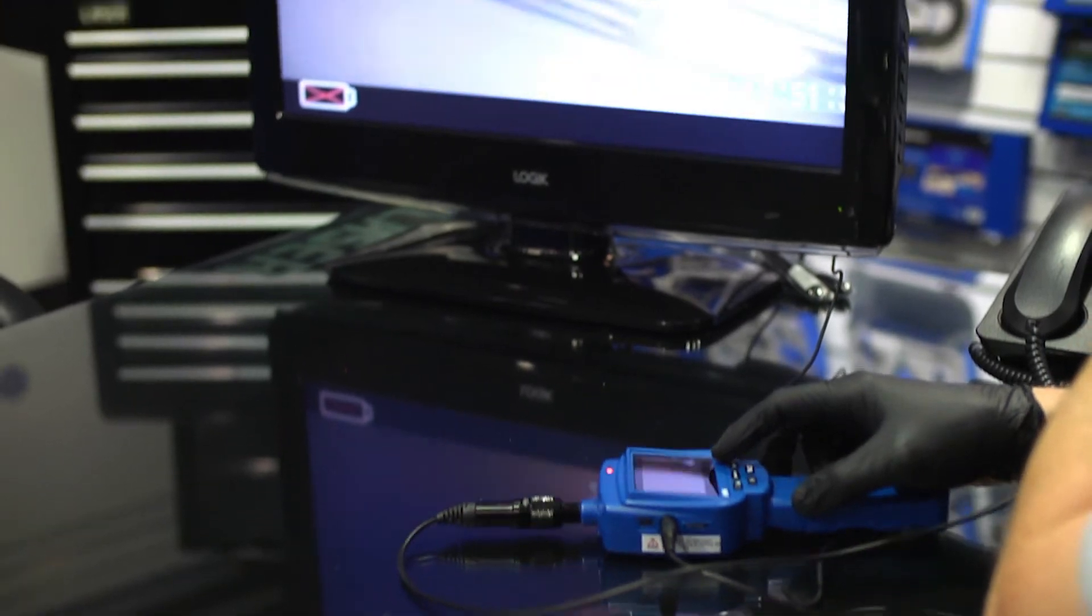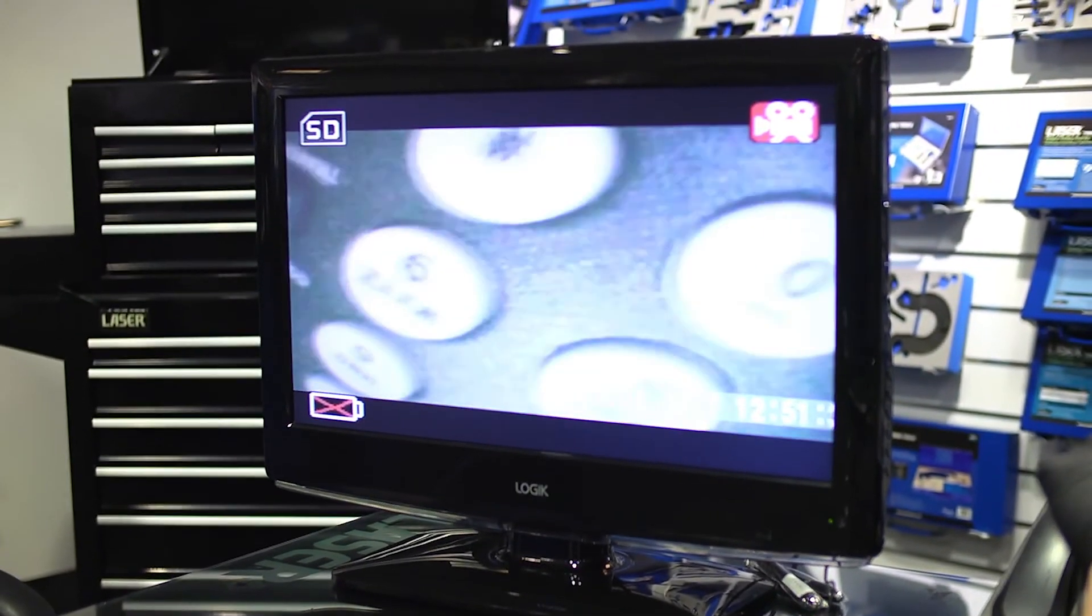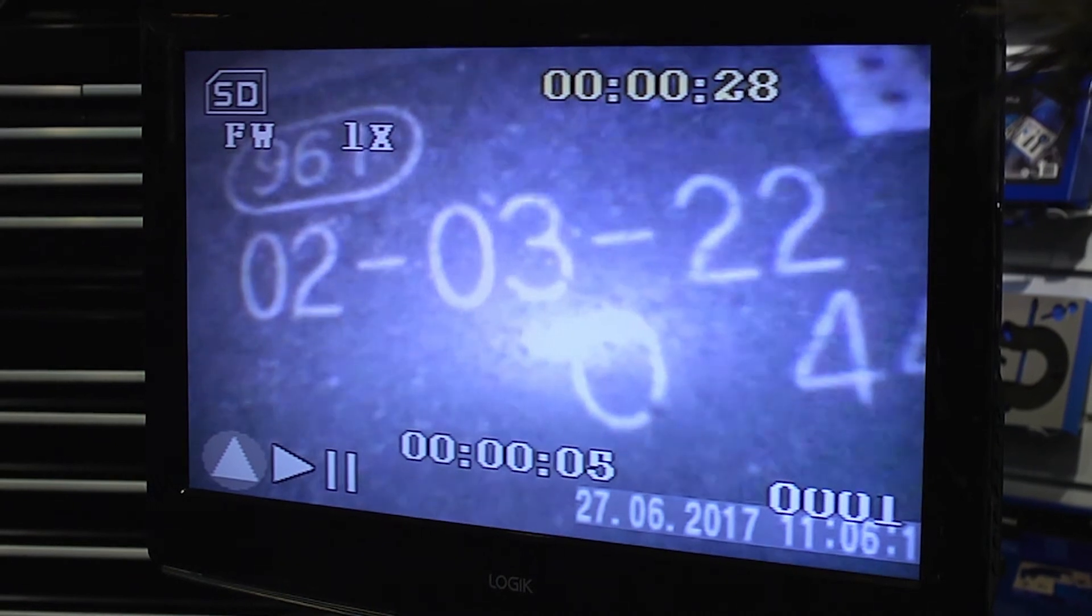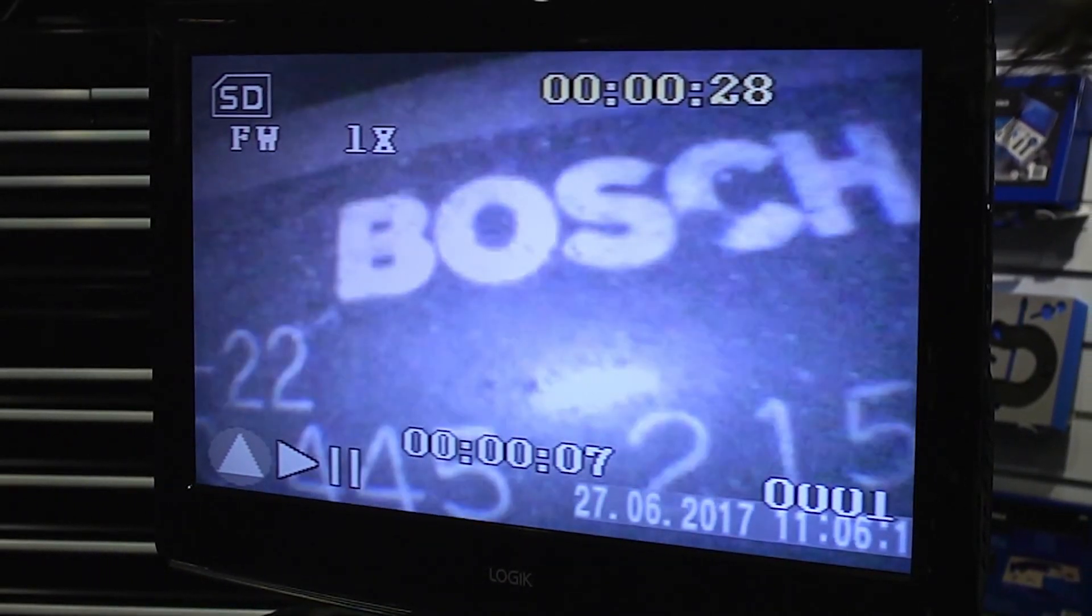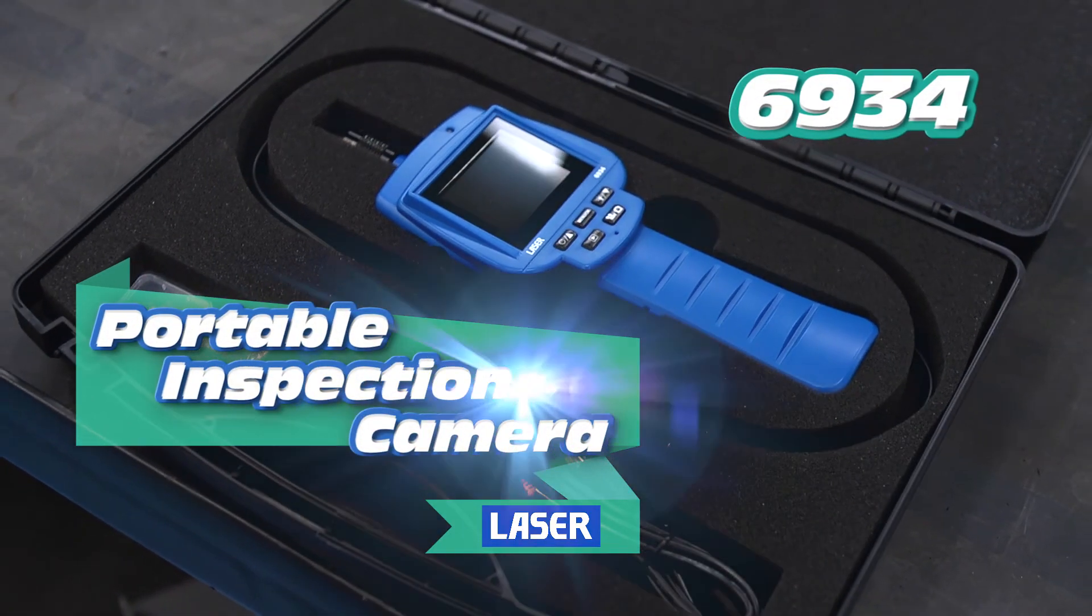With its extremely narrow 3.9mm camera head and probe, the laser tools portable inspection camera lets you easily perform visual inspections in very hard to reach areas.